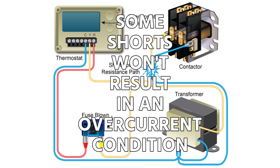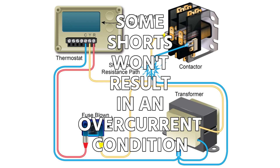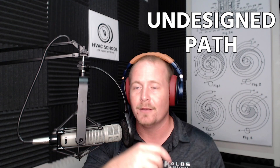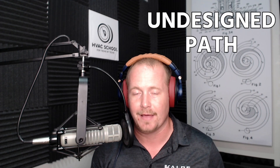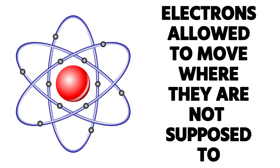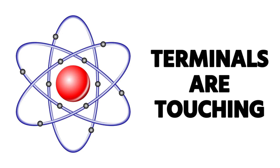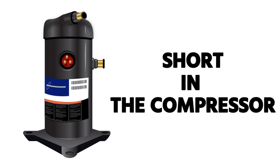There are some shorts that actually won't result in an overcurrent condition or current that's too high. In other words, you may have a short that doesn't trip the breaker or blow the fuse, but it's still a problem. So really, anytime there's an undesigned path — meaning electrons are allowed to move in a place that they're not supposed to — because terminals are touching or because there's a short inside of a compressor or whatever the case may be.